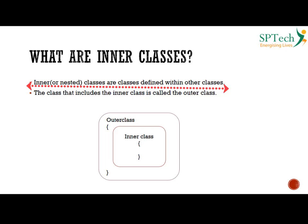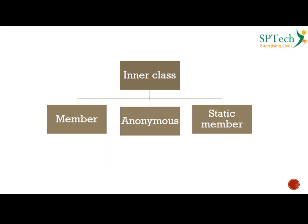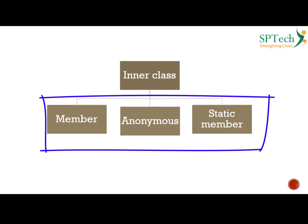When you have an inner class, the class which contains it is called the outer class, and the outer class contains the inner class. To understand how inner classes work — how to create an object of an inner class and how to access methods — I will show you a program. But first, let's understand the three types of inner classes: member inner class, anonymous inner class, and static member inner class.